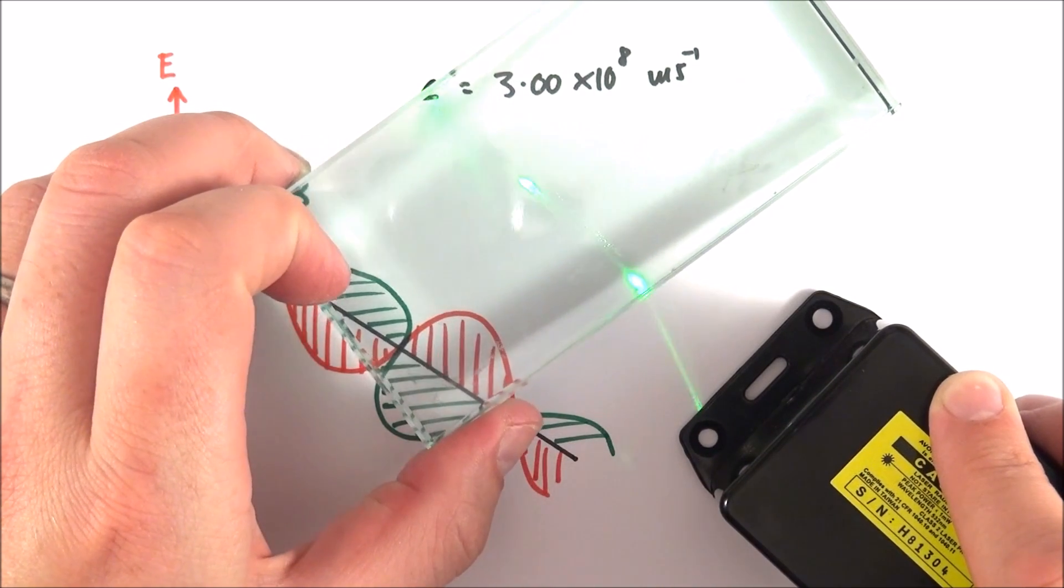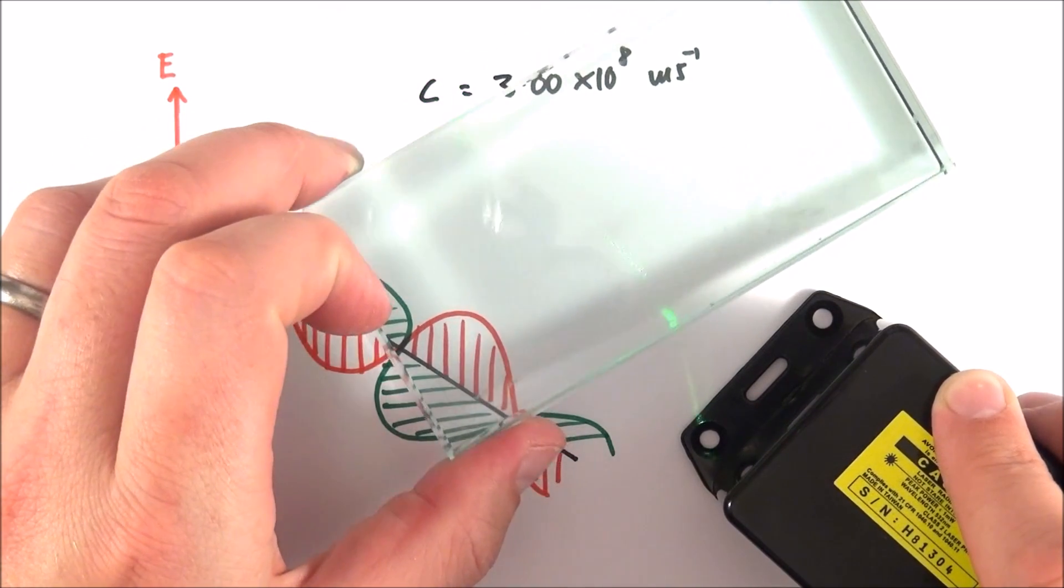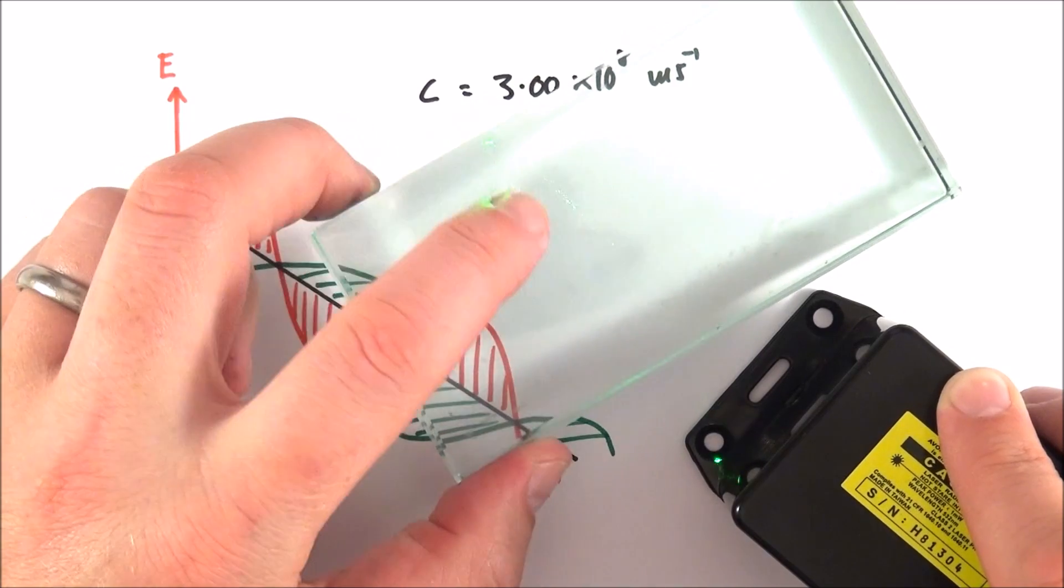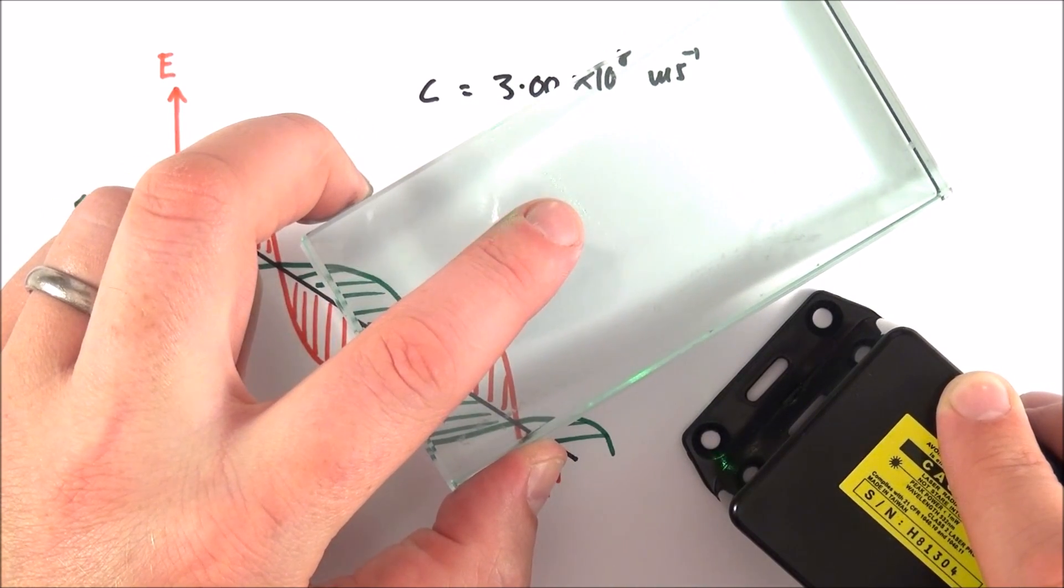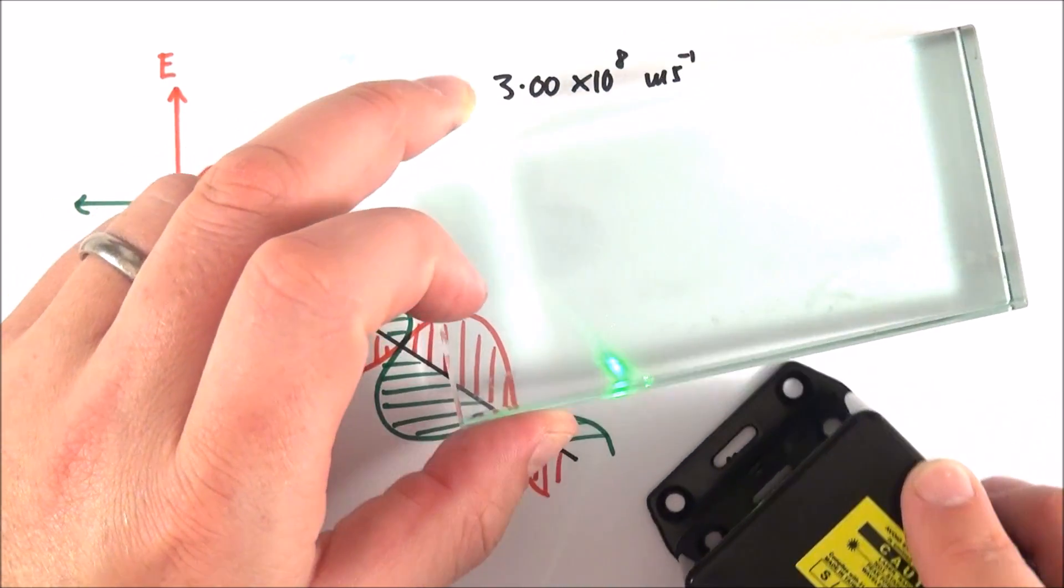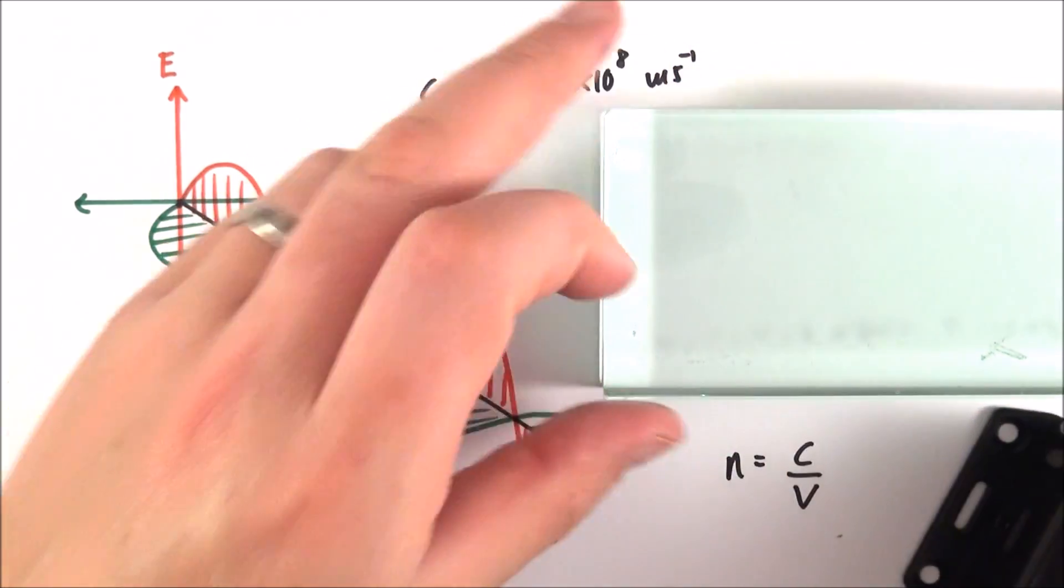But that does change, and it changes if we shine this light through another material. So what we have here is something which is optically dense—it's just a glass prism. And as we shine the light at it, the light slows down inside. Actually, we can look at how much it slows down by using something called the refractive index.